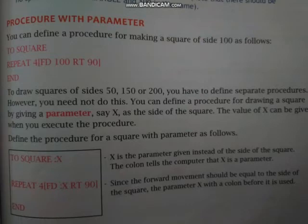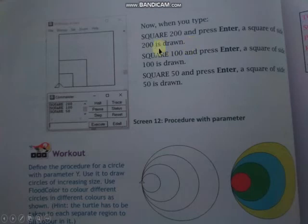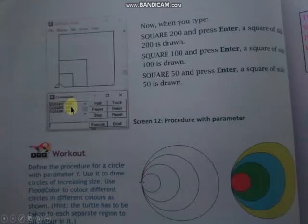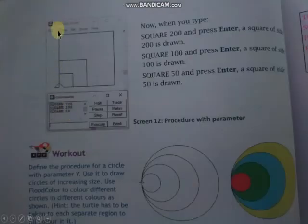Since the forward movement should be equal to the side of the square, the parameter :x is used. Now let's execute the procedure. When you type SQUARE 200 and press Enter, a square of side 200 is drawn. यहाँ पर जब हमारी procedure execute करेंगे, तब हम उसके साथ x की value define करेंगे। So SQUARE 200, then SQUARE 100, and SQUARE 50 — each draws a square of the respective size.